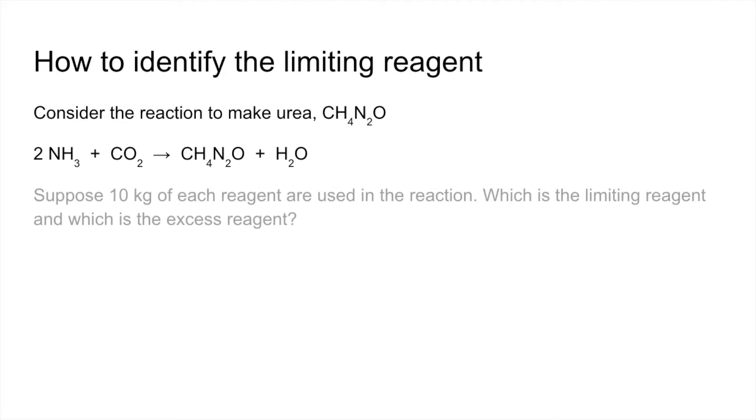And let's suppose that we had 10 kilos of each reagent, each chemical used in the reaction. So we've got to work out which is the limiting reagent and which is the excess reagent. And then we're going to use that information to work out the maximum mass of urea possible from the reaction.